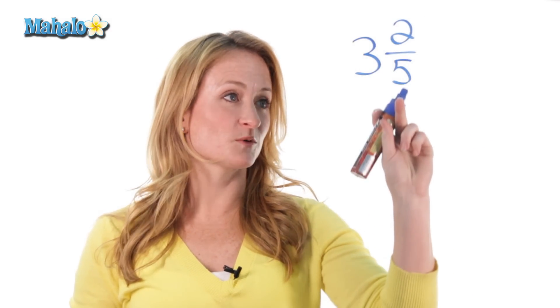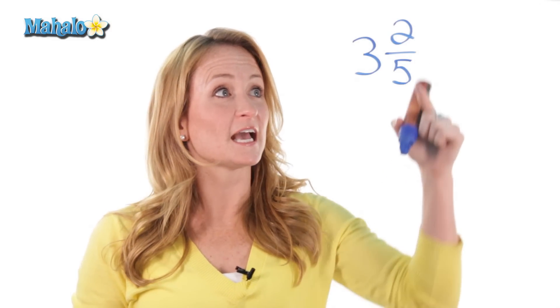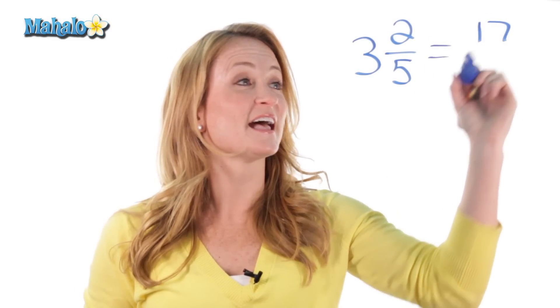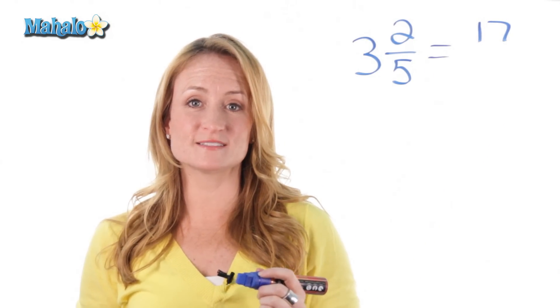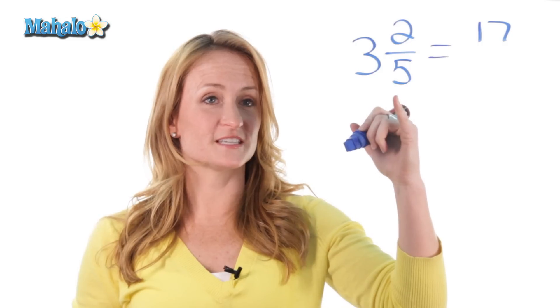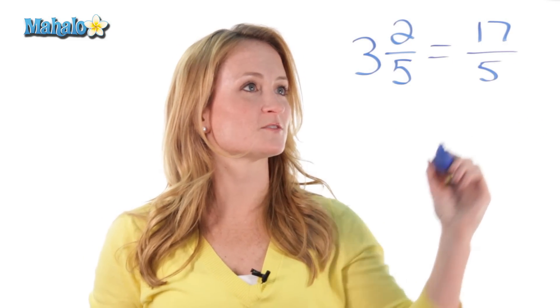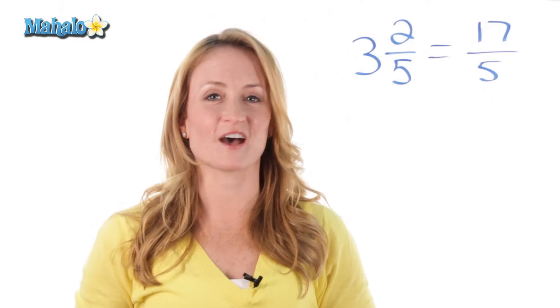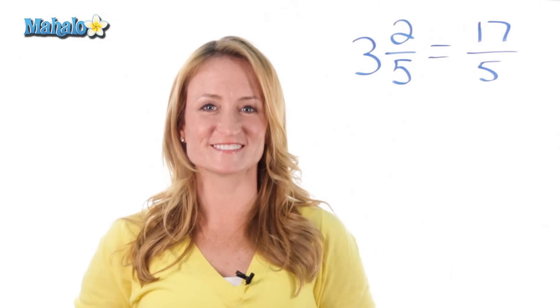So for this one, we multiply 5 times 3 is 15, and add the 2. 15 plus 2 is 17. That number goes on top, and your denominator stays the same. So 3 and 2 fifths turned into a fraction is 17 over 5, and that's how you turn a mixed number into a fraction.